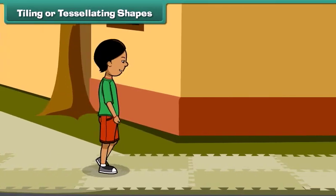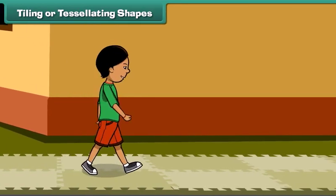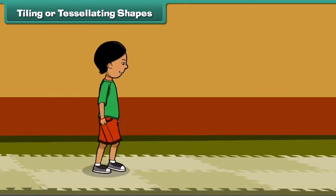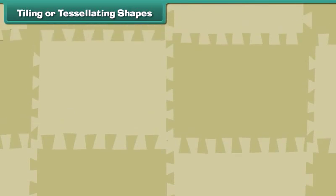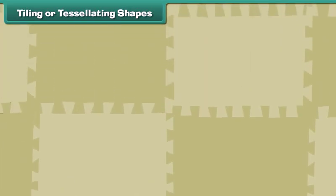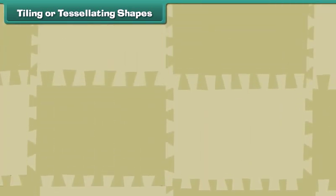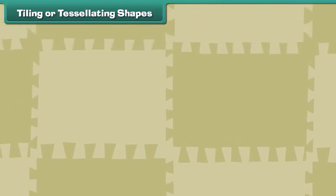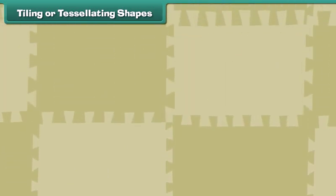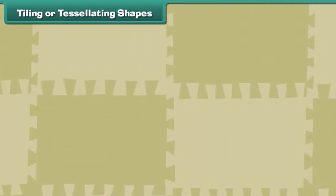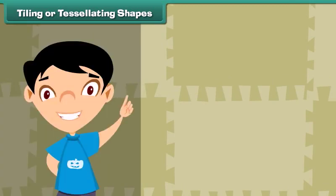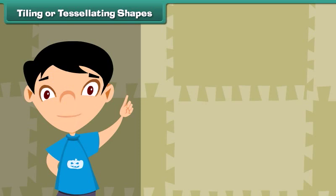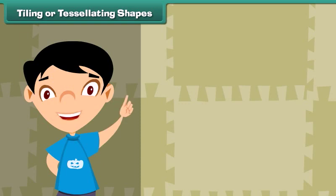Rajini is on her way to the pharmacy and notices tiles of irregular shapes on the pavement. She observes that the tiles have been fitted together without any gaps between them, and the tiles do not overlap. The tiles form a tessellation. A tessellation is a two-dimensional figure created through the repeated use of a geometric shape in such a way that there are no gaps or overlaps.